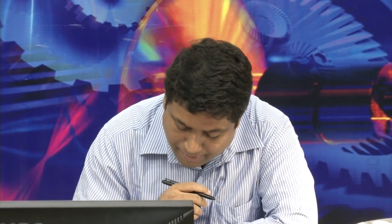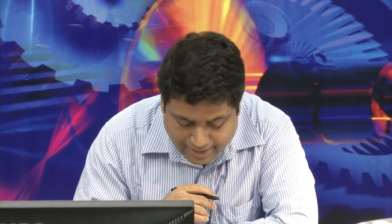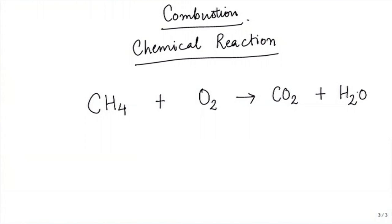We are not looking at nuclear reactions where atoms of one element transmute into another. Every element's atoms must balance on either side. Carbon is one on each side — balanced. Hydrogen: four on the left, so we add two H₂O to get four. Oxygen: CO₂ contains one O₂ and 2×H₂O adds two more O's, so we need two O₂ on the left. The balanced reaction is: CH₄ + 2O₂ → CO₂ + 2H₂O.